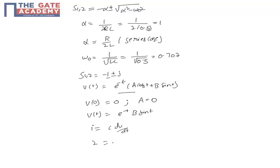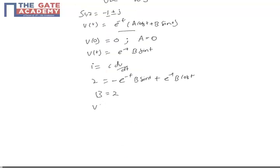So 2 equals minus e power minus t B sin t plus e power minus t B cos t. Substituting t equals 0, we get v of t equals 2 e power minus t sin t.